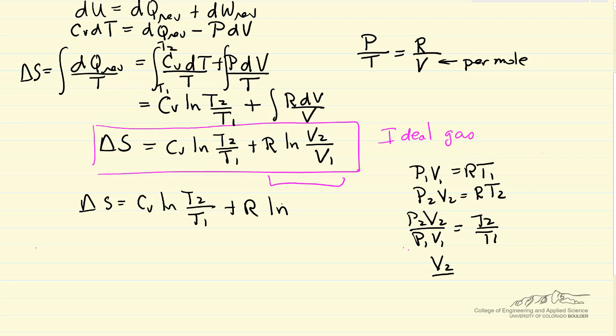Or V2 over V1 is pressure one, temperature two, over pressure two, temperature one. I can substitute now for this term, the log term, so pressure initial, temperature final, over P2 T1.